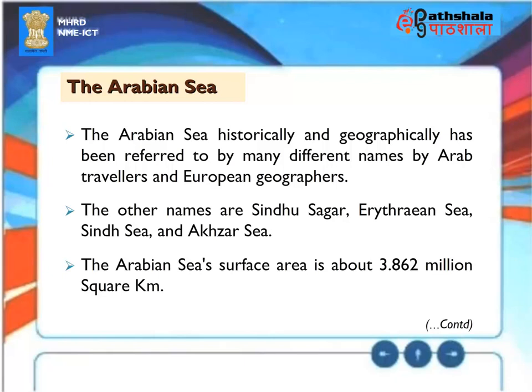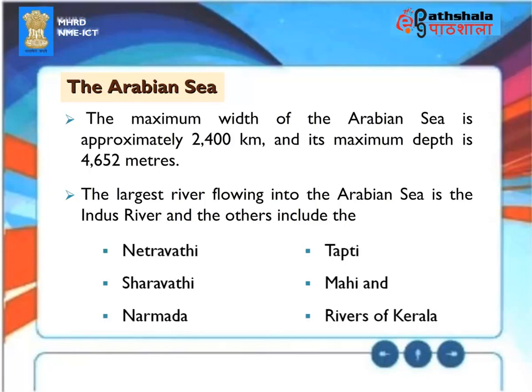The Arabian Sea has historically been referred to by many names by Arab travelers and European geographers, including Sindhosagar, the Erythraean Sea, Sindh Sea and Aqzar Sea. Its surface area is about 3,862 million square kilometers. The maximum width is approximately 2,400 kilometers and its maximum depth is 4,652 meters. The largest river flowing into the Arabian Sea is the Indus River; others include the Netravati, Sharavati, Narmada, Tapati, Mahi and the rivers of Kerala.